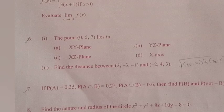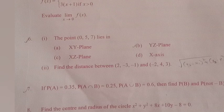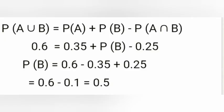Question 7. If P(A) = 0.35, P(A∩B) = 0.25, P(A∪B) = 0.6, find P(B) and P(not B). P(A∪B) = P(A) + P(B) - P(A∩B). So 0.6 = 0.35 + P(B) - 0.25. P(B) = 0.6 - 0.35 + 0.25 = 0.5. P(not B) = 1 - P(B) = 0.5.